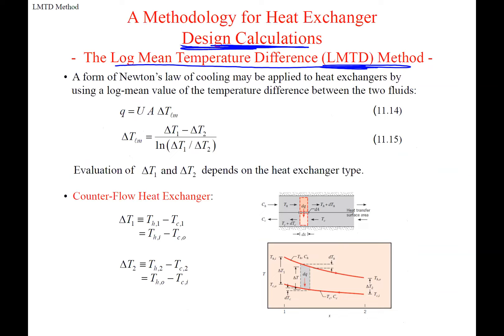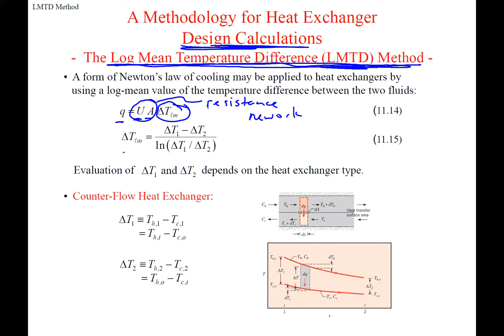Now getting into design calculations using the log mean temperature difference (LMTD) method. This was introduced in Chapter 8 and uses the overall heat transfer coefficient times surface area. The total heat transferred equals UA times the log mean temperature difference. Delta T1 and delta T2 are defined differently depending on the heat exchanger type.